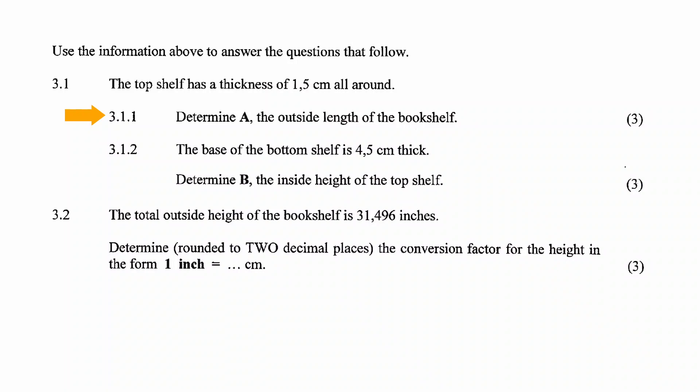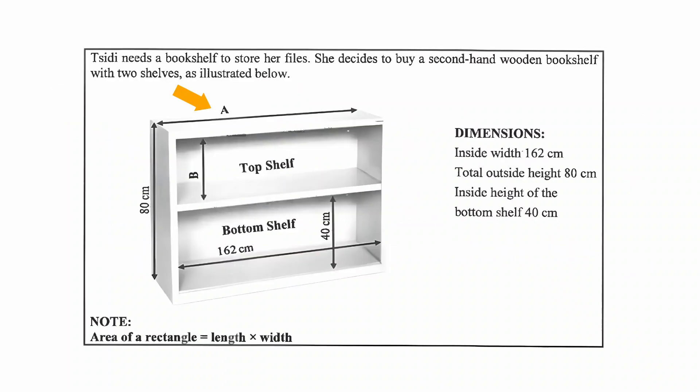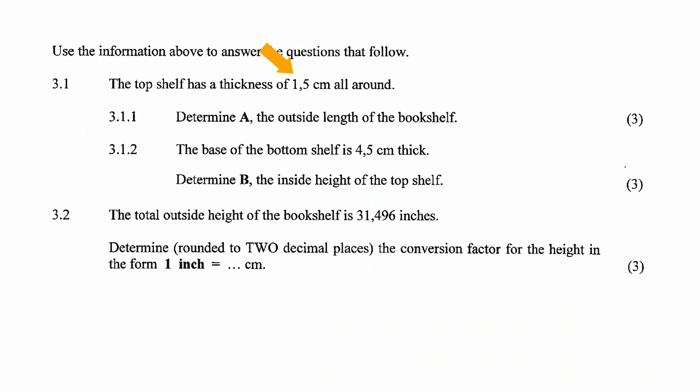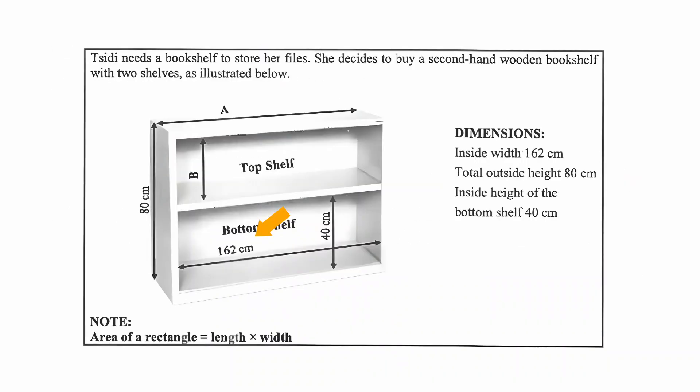In question 3.1.1, we have to determine A, the outside length of the bookshelf. From the information given, we know that A represents the outside length of the bookshelf. The thickness of the wood on each side equals 1.5 centimeters. We're also given the inside width of the bottom shelf as 162 centimeters. The thickness of the sides remains the same from the top to the bottom of the bookshelf.